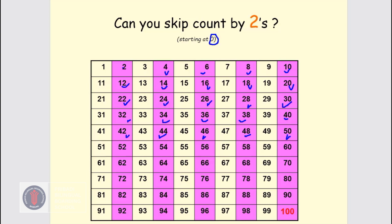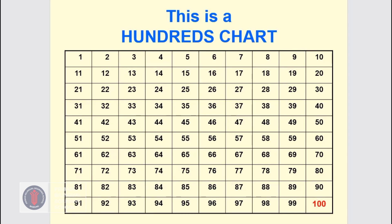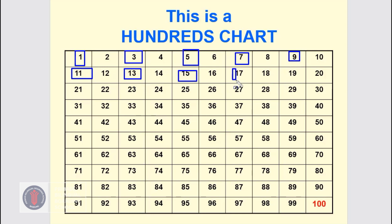Can you count it one more time? You may pause the video and count from 0 to 100. Now we will start at 1 and count 2 by 2. Let's do it together. After 1, just count 2 by 2: 1, 3, 5, 7, 9, 11, 13, 15, 17, 19, 21, 23, 25, 27, 29. Can you do all the numbers to 100 on your 100 chart?